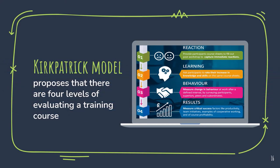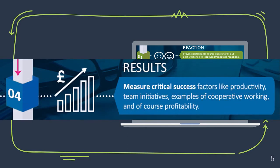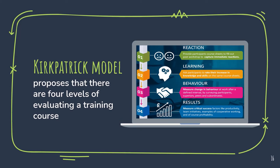Level four, the last level, is called Results — this measures whether the training has a direct impact on the organization's growth. Level four will likely be the most costly and time-consuming. The biggest challenge is to identify which outcomes, benefits, or final results are most closely linked to the training and to come up with an effective way to measure these outcomes long term. The Kirkpatrick model is probably the best-known model for analyzing and evaluating results of training and educational programs, taking into account both informal and formal training styles across the four levels: Reaction, Learning, Behavior, and Results.